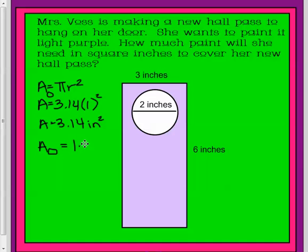Rectangle's areas are the length times the height, or the base times the height. We're multiplying the 3 times the 6. So when you multiply 3 times 6, you get 18.